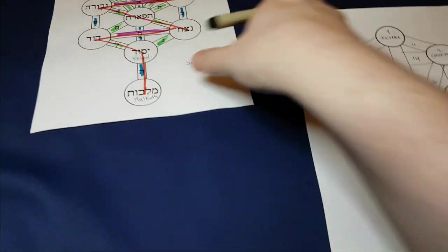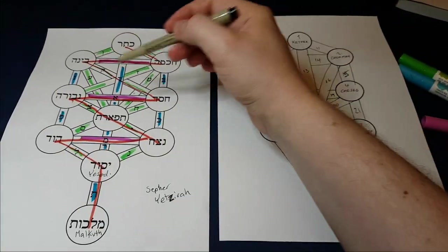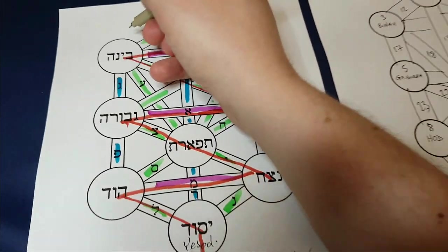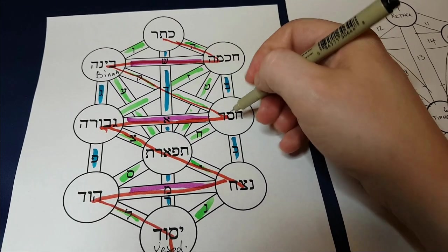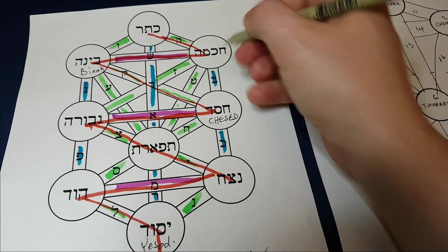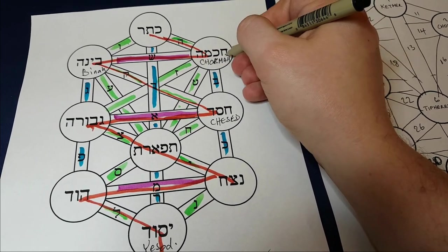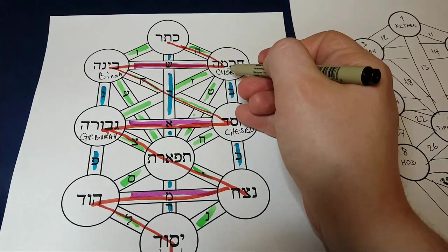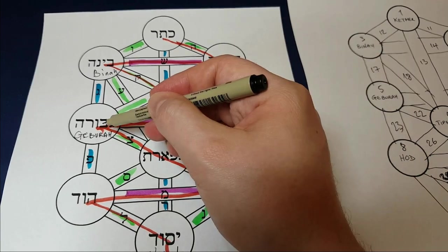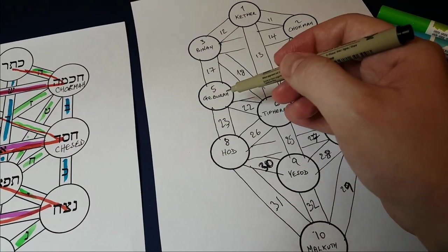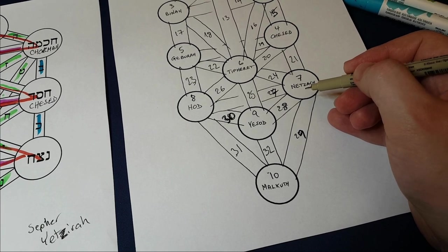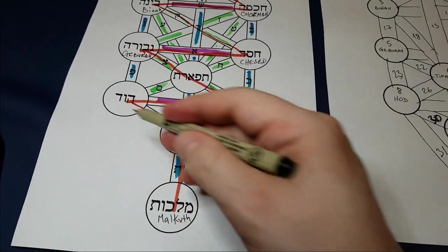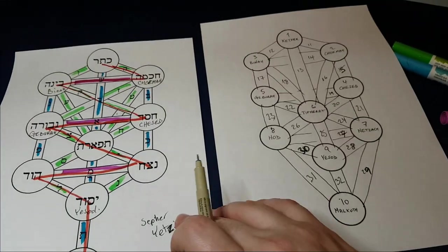So you'll notice that the main difference here is that instead of having paths from Binah, let me just write those in, Binah, instead of having from Binah to Chesed and from Chokmah to Geburah. So these diagonals do not exist here. Yeah. And instead, we've got paths from Netzach to Malkut and Hod to Malkut, which do not exist here.